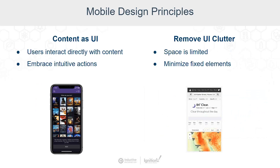Removing UI clutter is something we always touch on in our design sessions. It's simply getting rid of anything on the screen that isn't providing a lot of value to the user at any time. A good way to do that on mobile is to minimize the amount of fixed elements — if you add a fixed header or footer or both, you start to really eat up the available screen space.